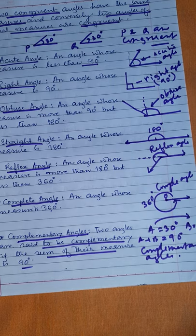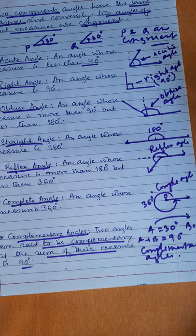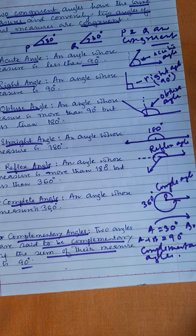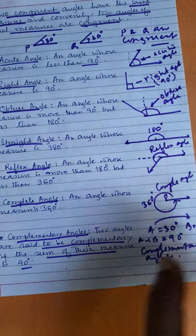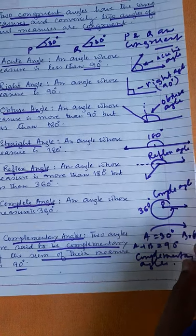The complementary angle of 35 degrees is 55 degrees, since their sum is 90 degrees. A question may be asked: whose complementary angle is itself? The answer is 45 degrees, because 45 plus 45 is 90 degrees.